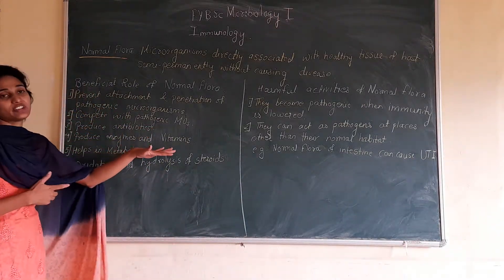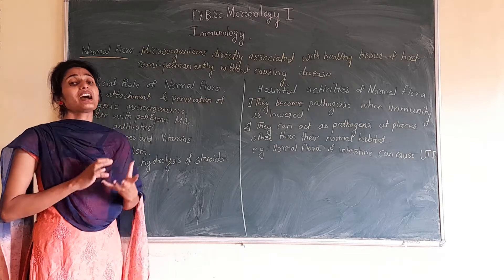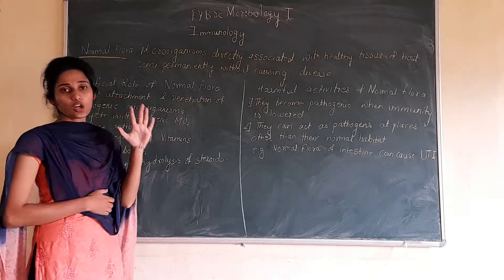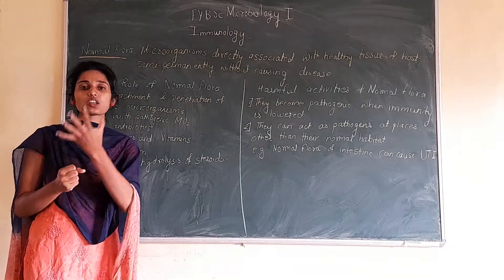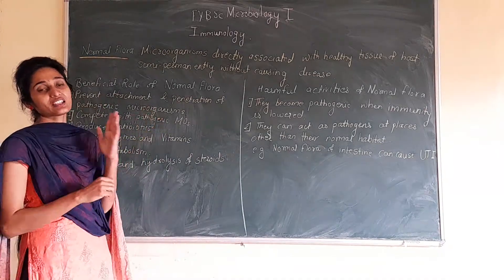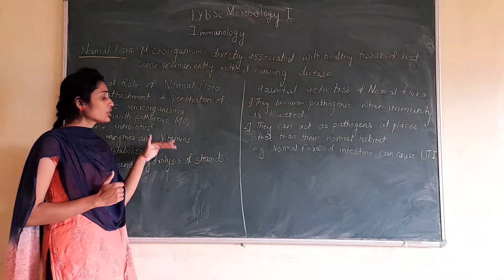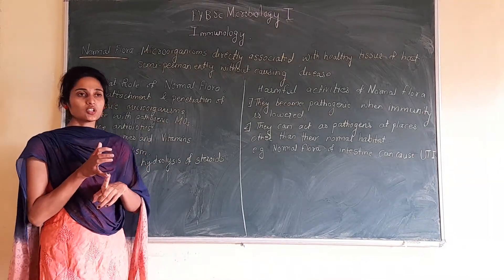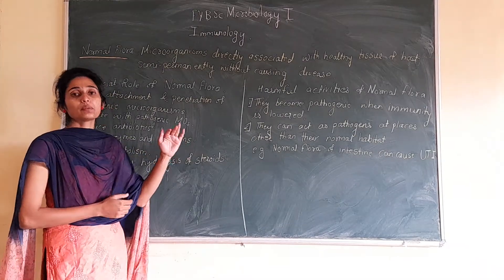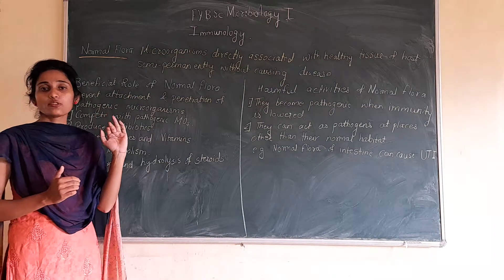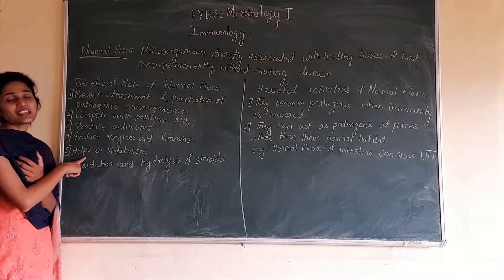Then, normal flora microorganisms produce enzymes. Different types of enzymes like cellulase or galactosidase are produced by microorganisms in the normal flora, which help in the proper digestion and breakdown of food material. They also have the ability to produce vitamins. E. coli has the ability to produce vitamin B and vitamin K, which are very important for growth.